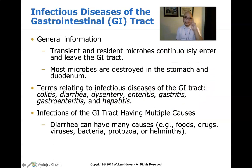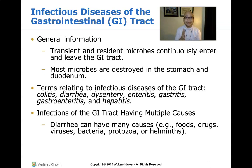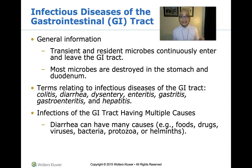Let us talk about infectious diseases of the gastrointestinal tract. Transient and resident microbes continuously enter and leave the GI tract. Transient microbes are not permanent residents, while resident microbes permanently reside and establish an ecological niche in our GI tract. Most microbes have difficulty colonizing the GI tract because they are destroyed in the stomach and duodenum due to high acidity.